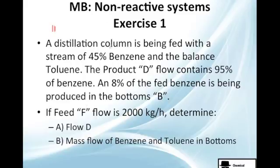Now, a distillation column is being fed by a stream of 45% benzene and the balance is toluene, which is roughly 55%. The product D flow contains 95% of the benzene. This is not composition, they are telling you the 95% of this benzene is in the product D. 8% of the fed benzene is being produced in the bottoms.